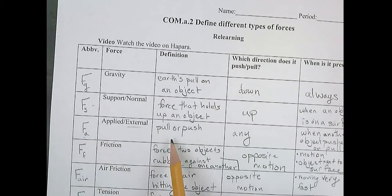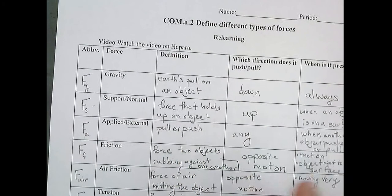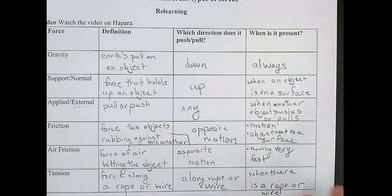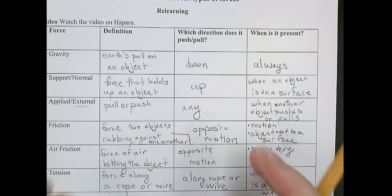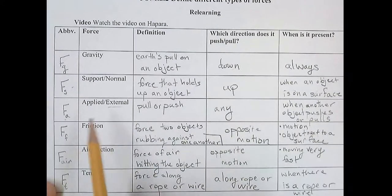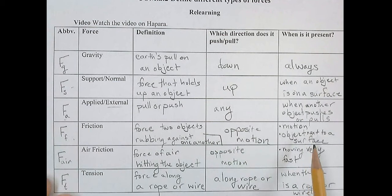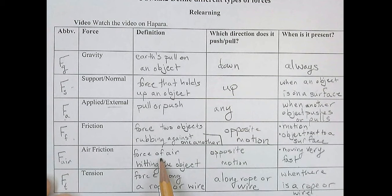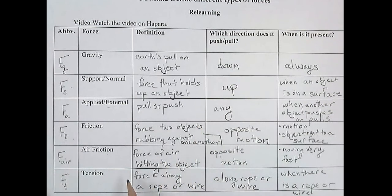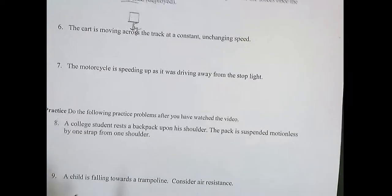Is there an applied force? Is something pushing or pulling? Is some other object pushing or pulling the person? I would say no. That's a little bit of a gray area, but no. Friction. Are two objects rubbing against each other? No. Air friction. Is the force of the air hitting the object? Or is there tension? So I'm going to accept, I would accept either of these.